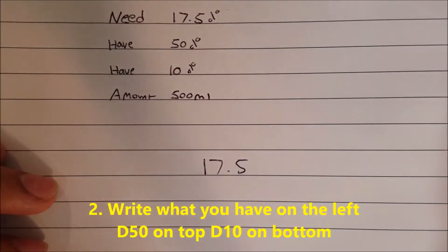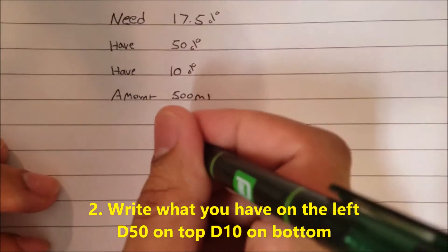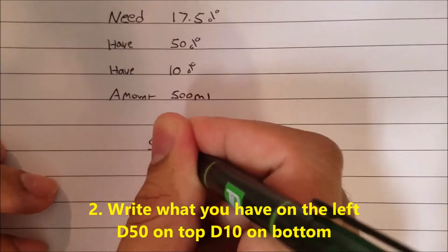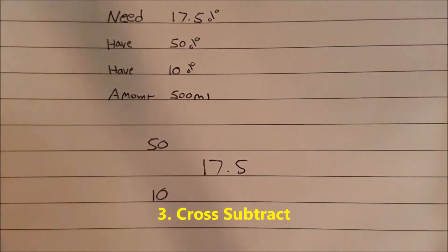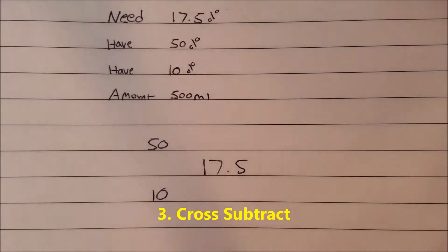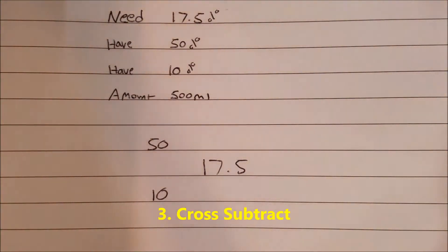Then the second step: write what you have on the left with the high number on top. So that would be the 50% on top, the 10% on the bottom.